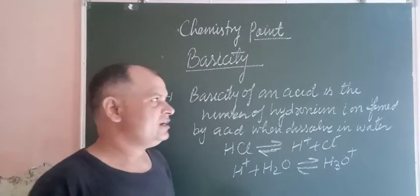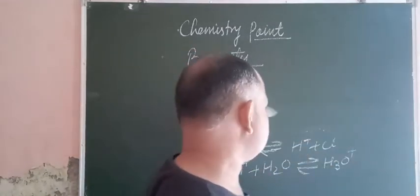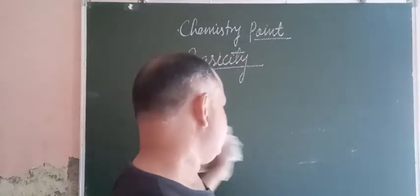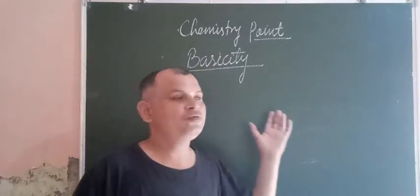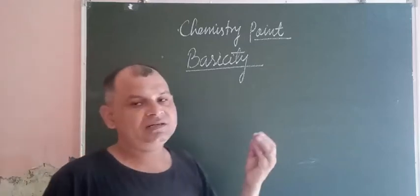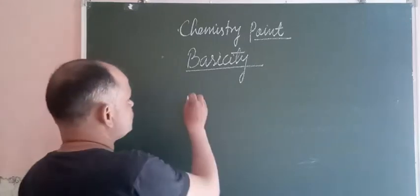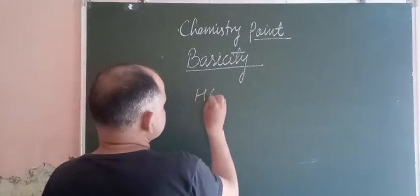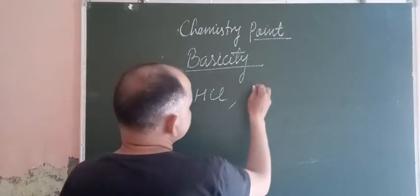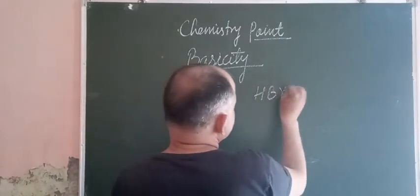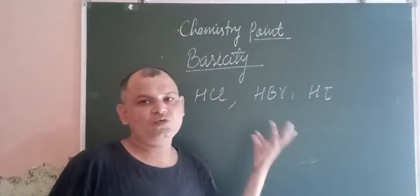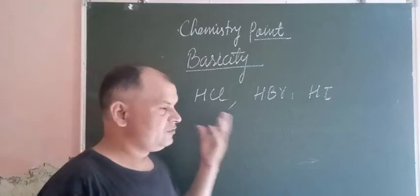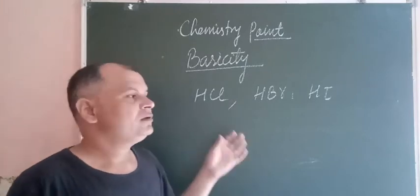There are three types of acids: monobasic, dibasic, and tribasic. HCl, HBr, and HI are monobasic acids because they give one hydrogen ion in one dissociation.